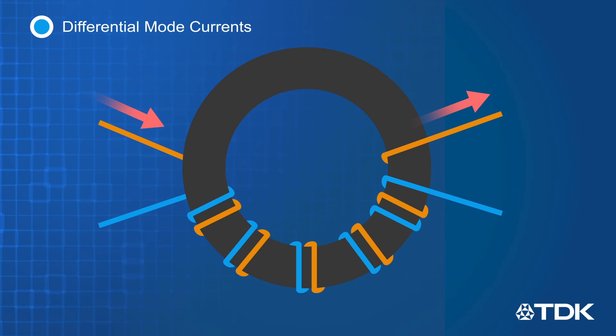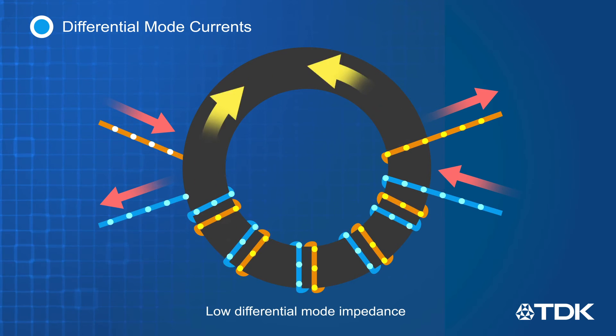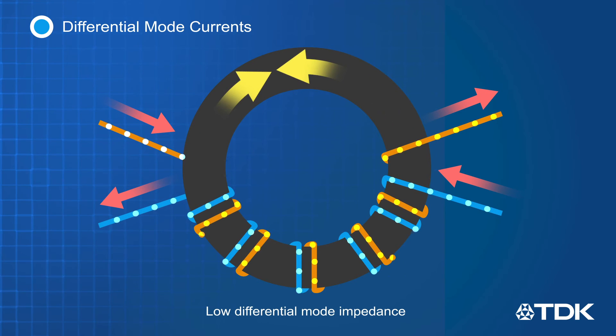Differential mode currents flow in opposite directions, and the magnetic fields that these currents generate cancel each other out. This results in low differential mode impedance and allows the desired differential signals to freely pass through the wires.